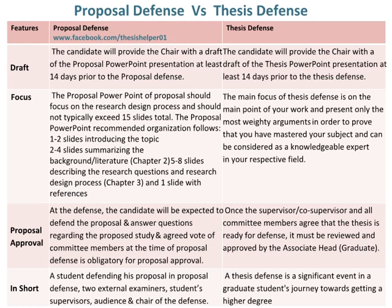Whereas, once the supervisor or co-supervisor and all committee members agree that the thesis is ready for defence, it must be reviewed and approved by the associate head, graduate. In short, a student defending their proposal in a proposal defence involves two external examiners, student supervisors, audience, and the chair of the defence. Whereas, a thesis defence is a significant event in a graduate student's journey towards getting a higher degree.